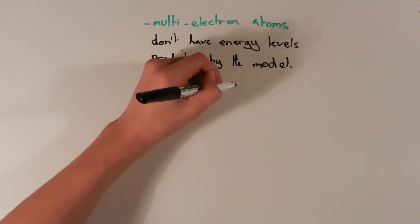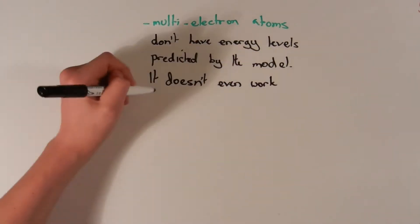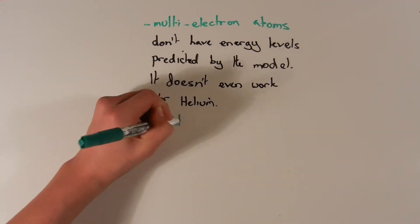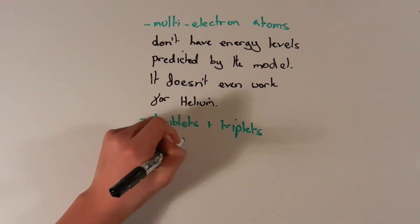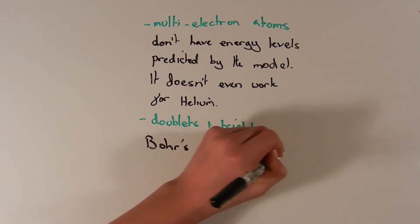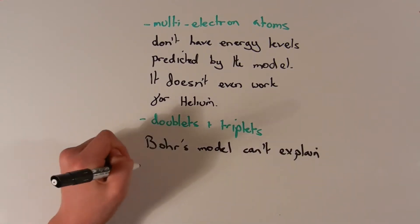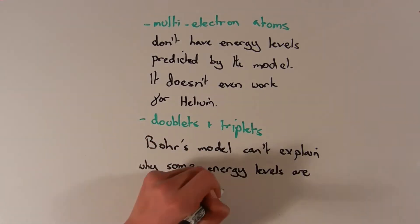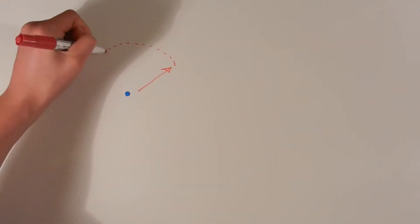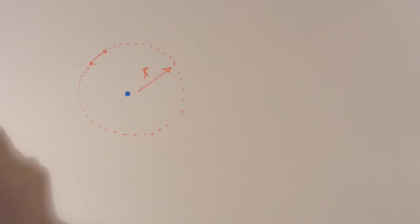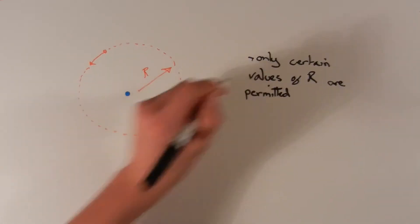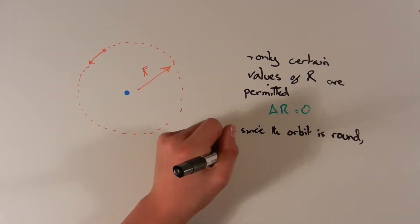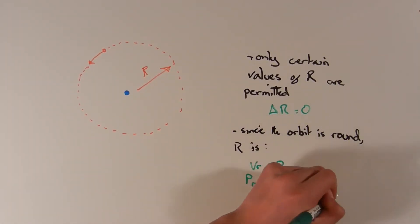Multi-electron atoms couldn't be predicted by the model — not even helium would work. Doublets and triplets are very close pairs or trios of spectral lines, and the Bohr model couldn't explain why some of these energy levels are so close together. The uncertainty principle also poses a problem, as it states that only certain values of R are permitted, and since the orbit is circular, R will be fixed.